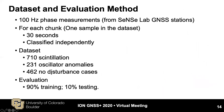The data we use is 100 Hz phase measurements, divided into chunks where each chunk is used as one sample in the dataset. Each chunk is 30 seconds long and classified independently. In order to train and test the method, we manually inspected a large amount of data and labeled more than 700 scintillation samples, more than 200 oscillator anomaly samples, and more than 400 no disturbance samples. We randomly shuffle the data and use 90% for training and 10% for testing.